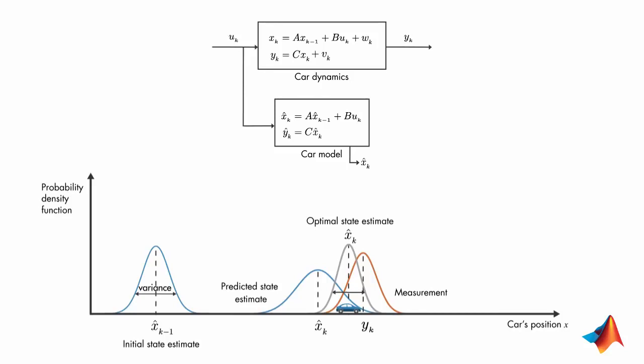And the mean of this probability density function gives us the optimal estimate of the car's position. This is the basic idea behind Kalman filters. But to win the competition, you need to be able to implement the algorithm.